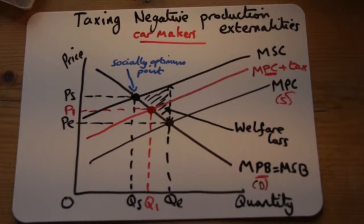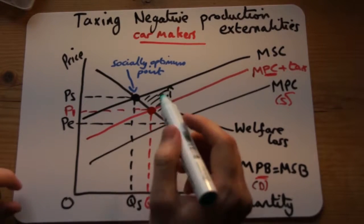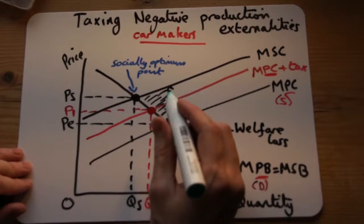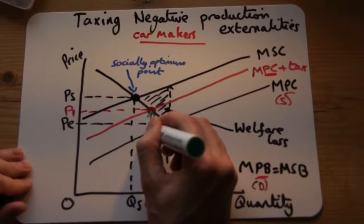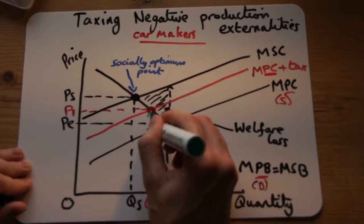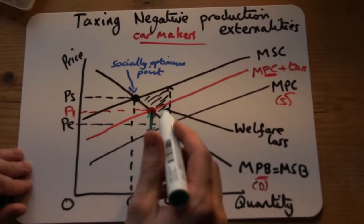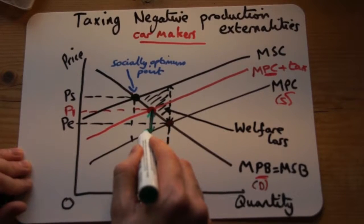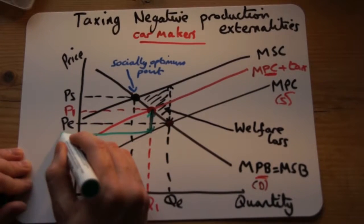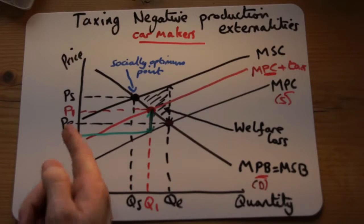So the tax the government gets from the producers is from the new equilibrium to the old supply line. We go from the new equilibrium here and we go to the old line, and that is the actual entire tax that the producers have to pay to the government. Then we go from the supply line, we go across and we call that PC, the cost.